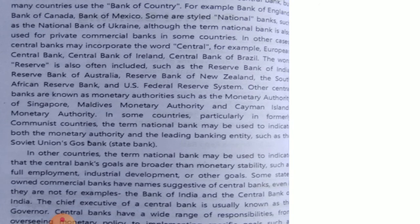In communist countries, the term 'national bank' may be used to indicate both monetary authority and the lending bank entity, such as the Soviet Union's Gosbank. So central banks are called by different terms — they can use 'monetary authority,' 'central,' 'bank of country,' 'national bank,' or 'reserve bank.' In other countries, the term 'national bank' may indicate goals broader than monetary stability, such as full employment and industrial development.